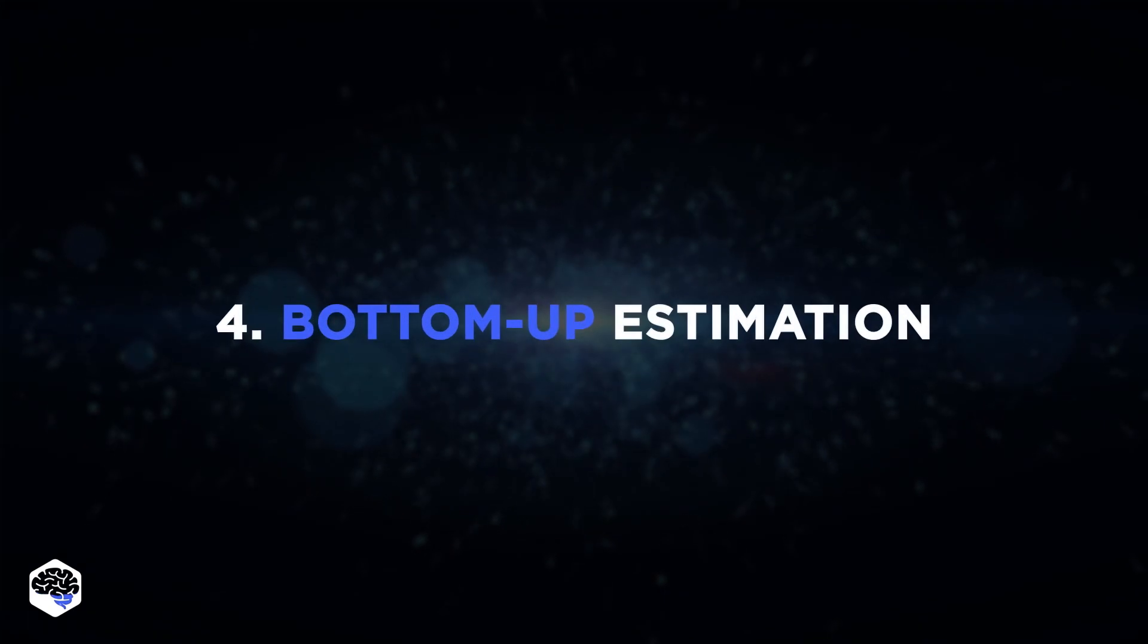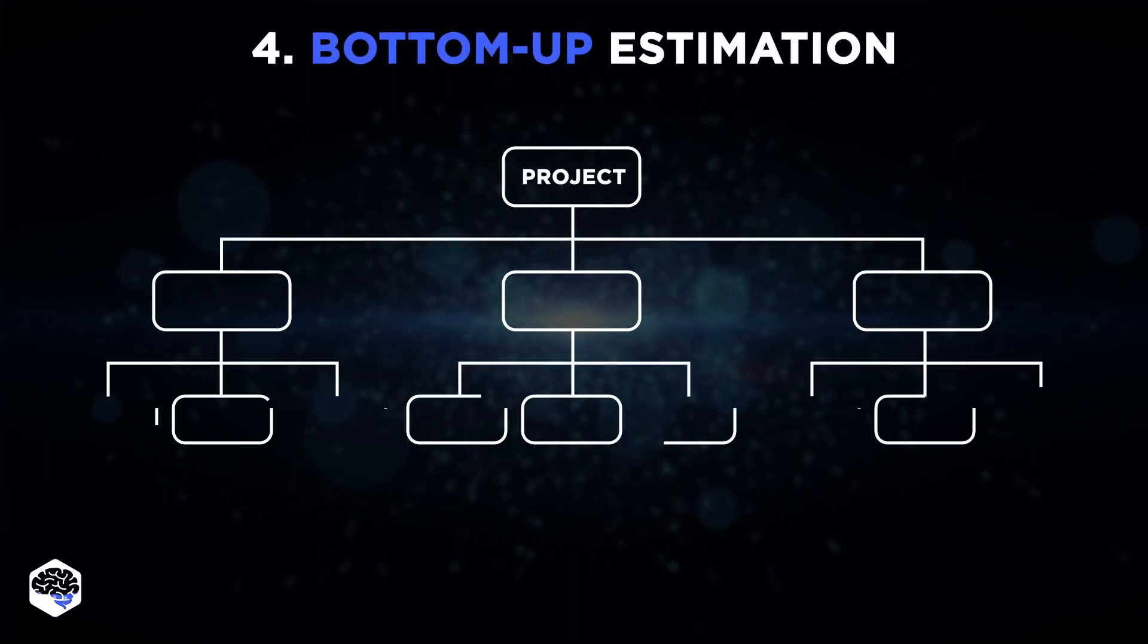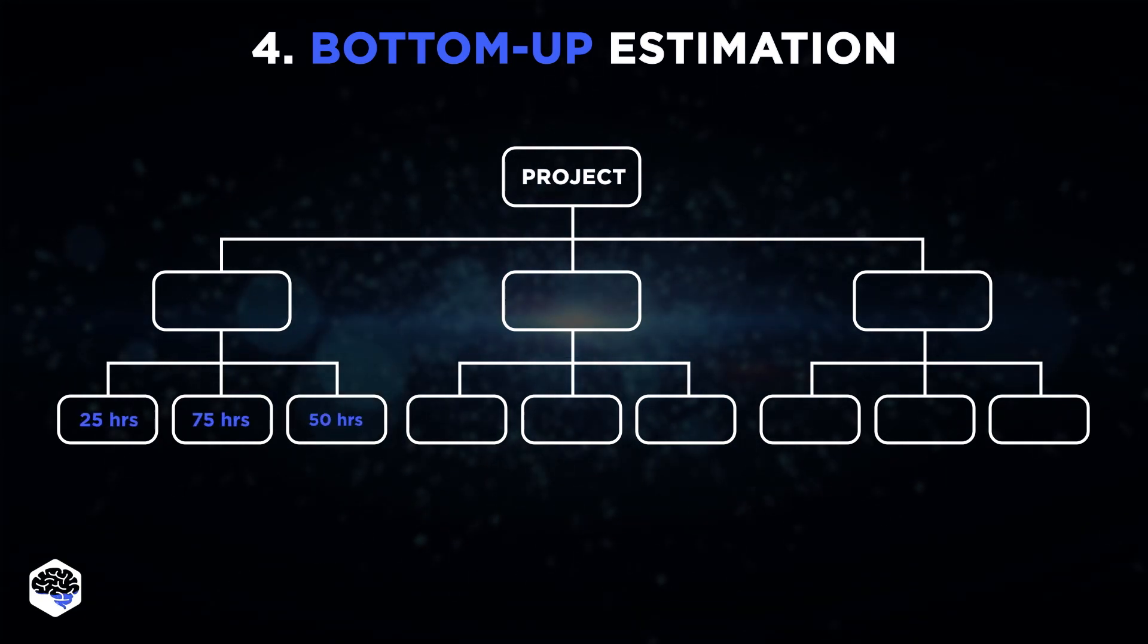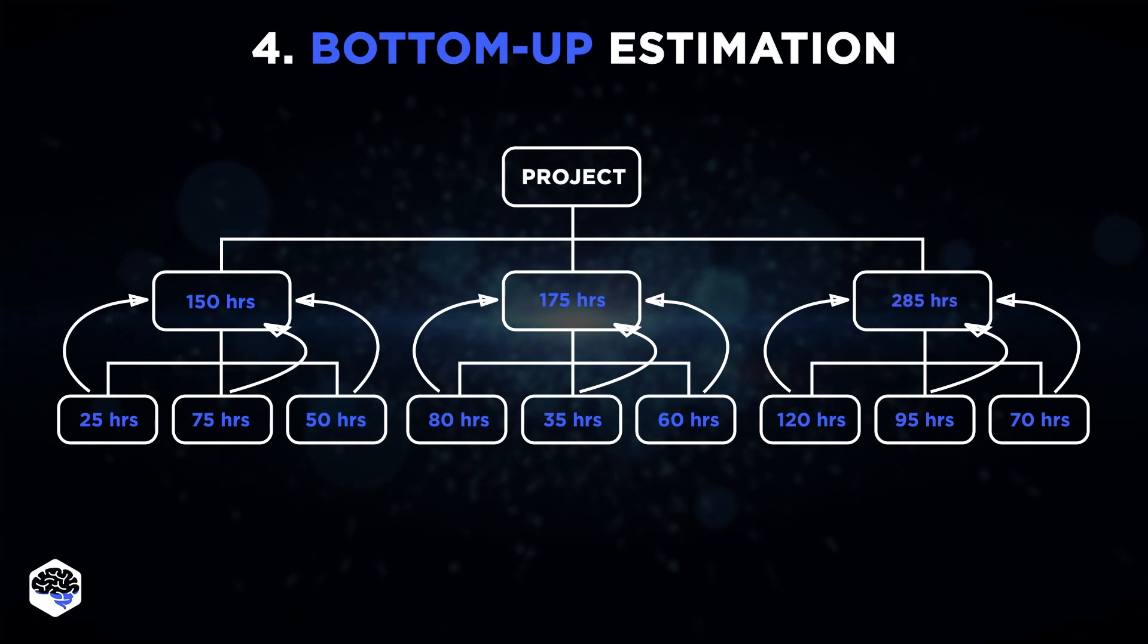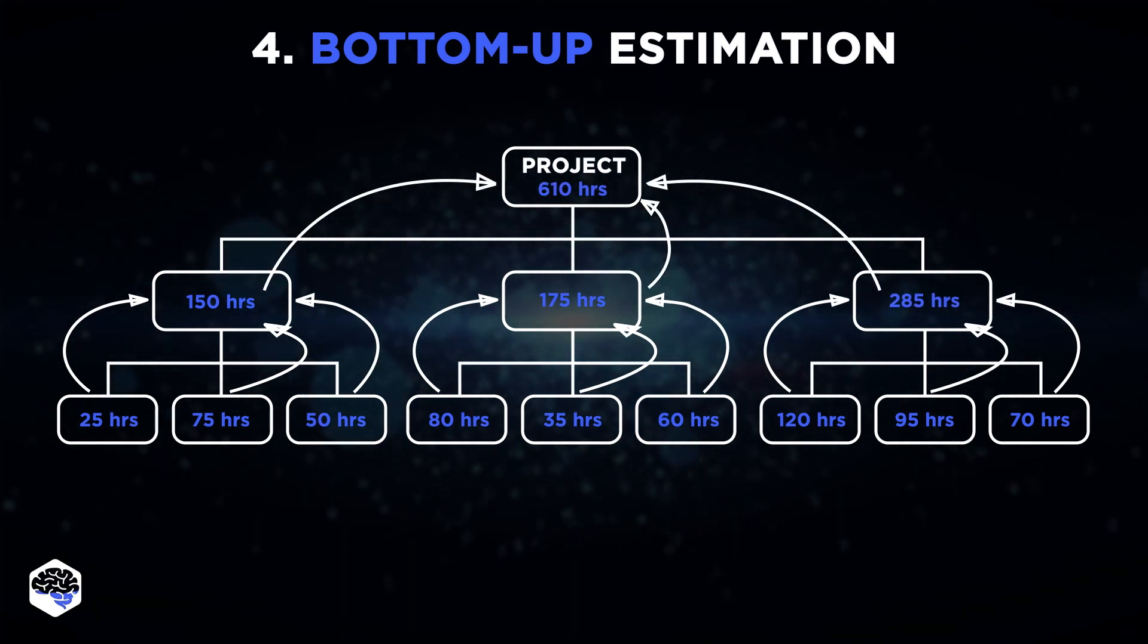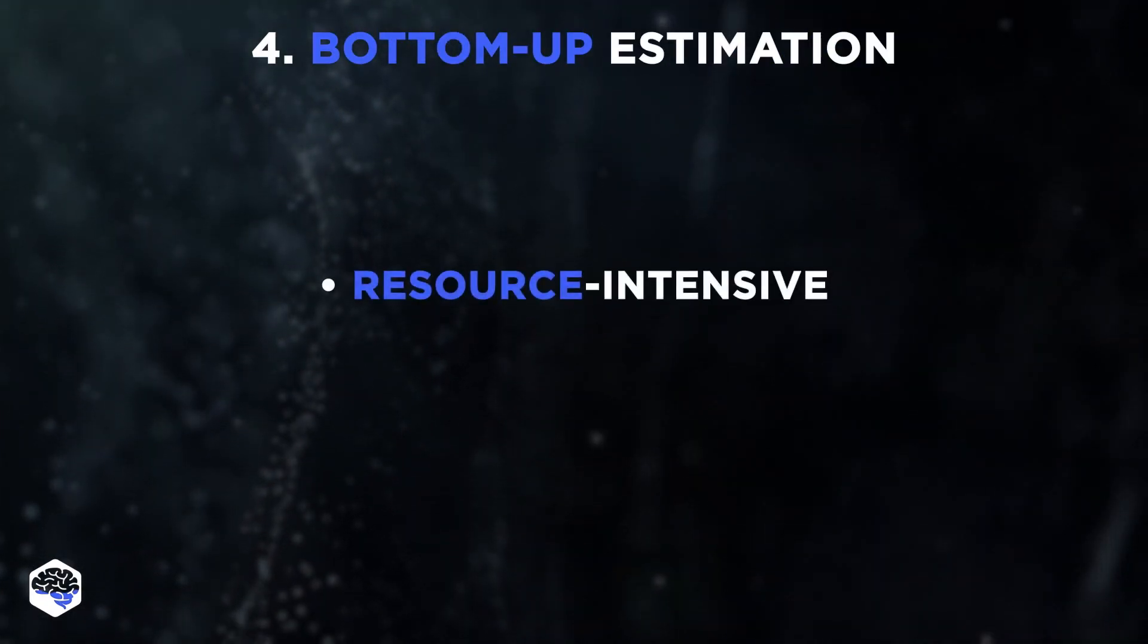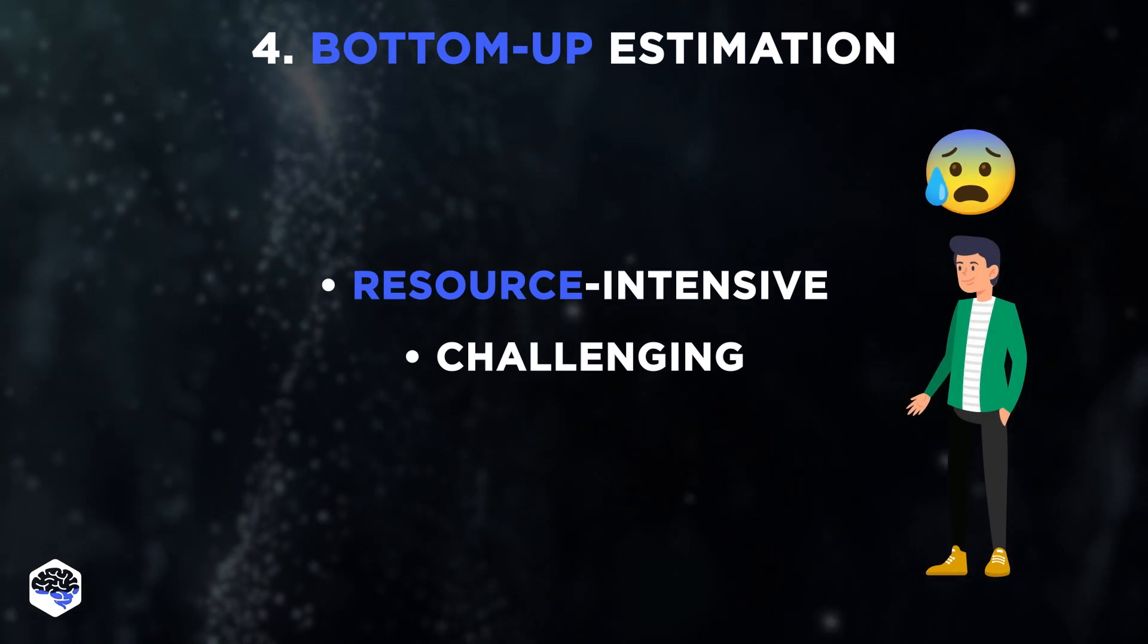The fourth method is Bottom-Up Estimation. This methodology involves estimations on a granular level for parts of the project. The estimates of all project components are then aggregated to determine the total project cost estimate. However, obtaining and aggregating these detailed estimates is usually resource-intensive and challenging, especially on large or complex projects.